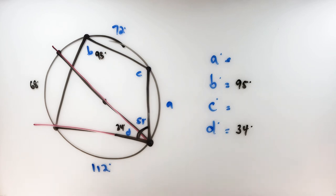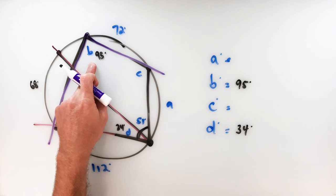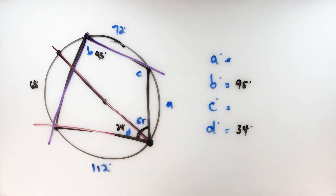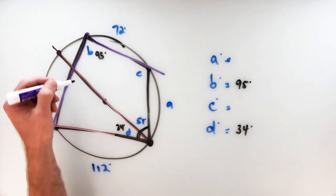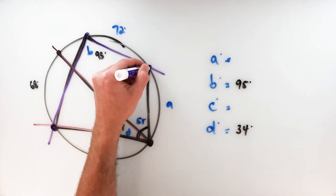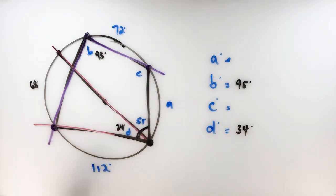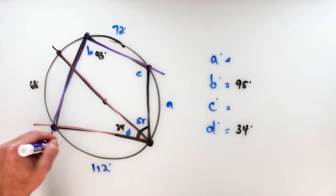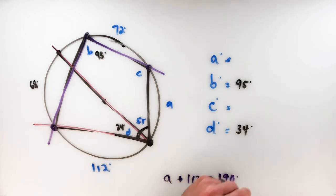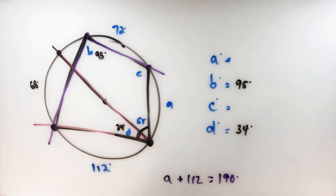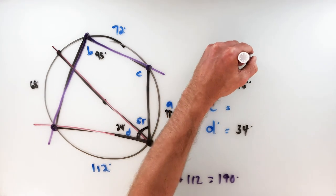Since angle B is an inscribed angle of 95 degrees, I can double it to get its intercepted arc: 95 times 2 equals 190. That arc consists of the 112 arc plus arc A. So angle A plus 112 equals 190, meaning A equals 190 minus 112, which is 78 degrees.